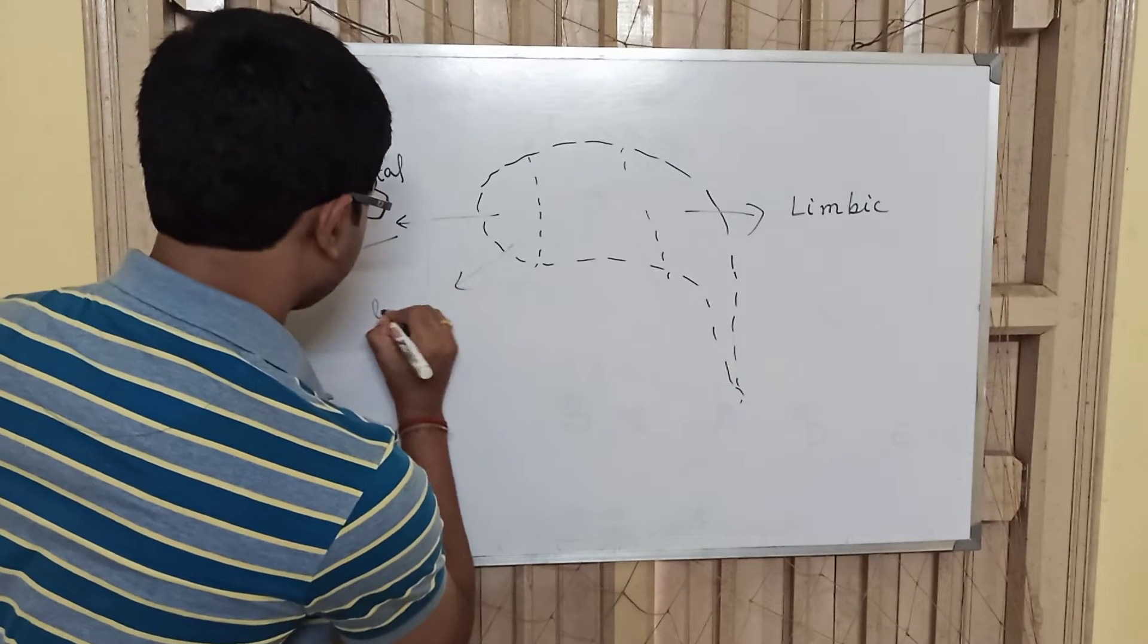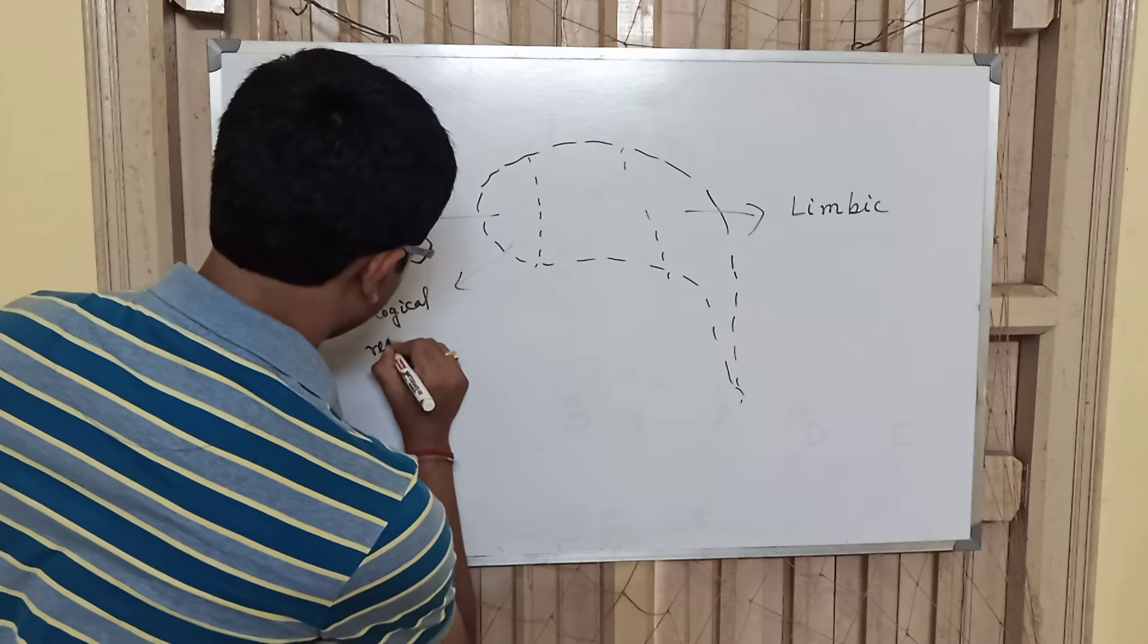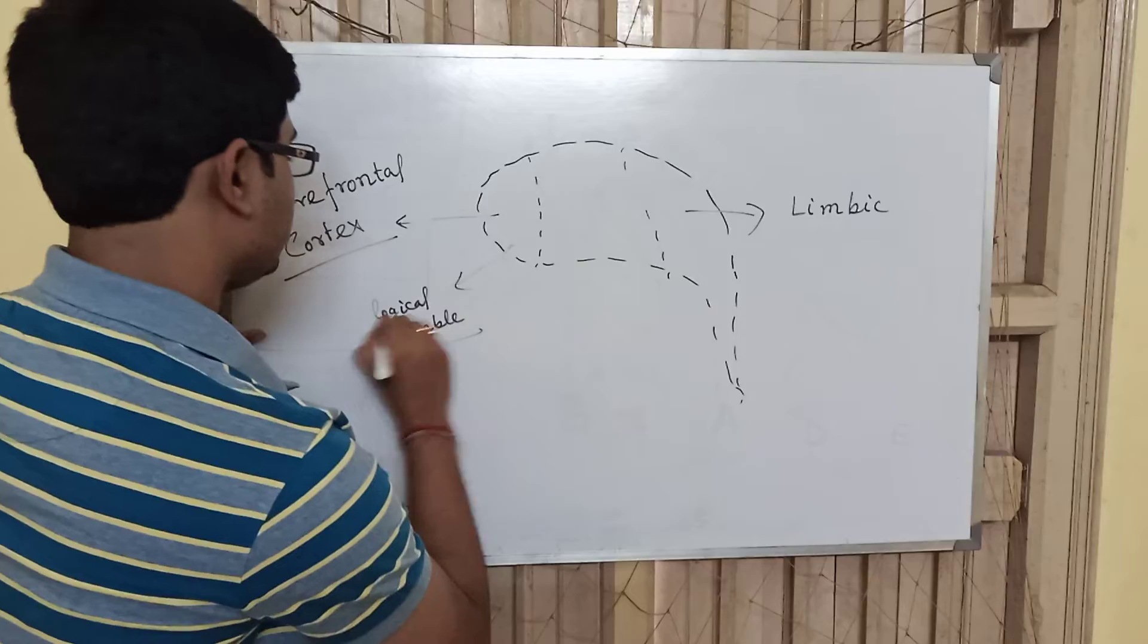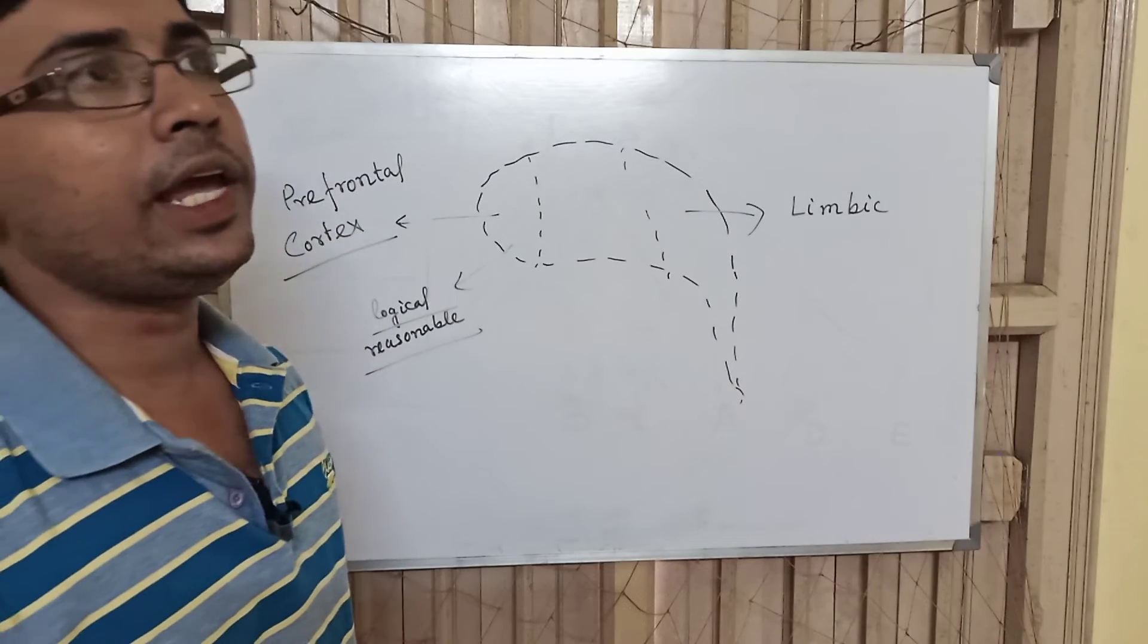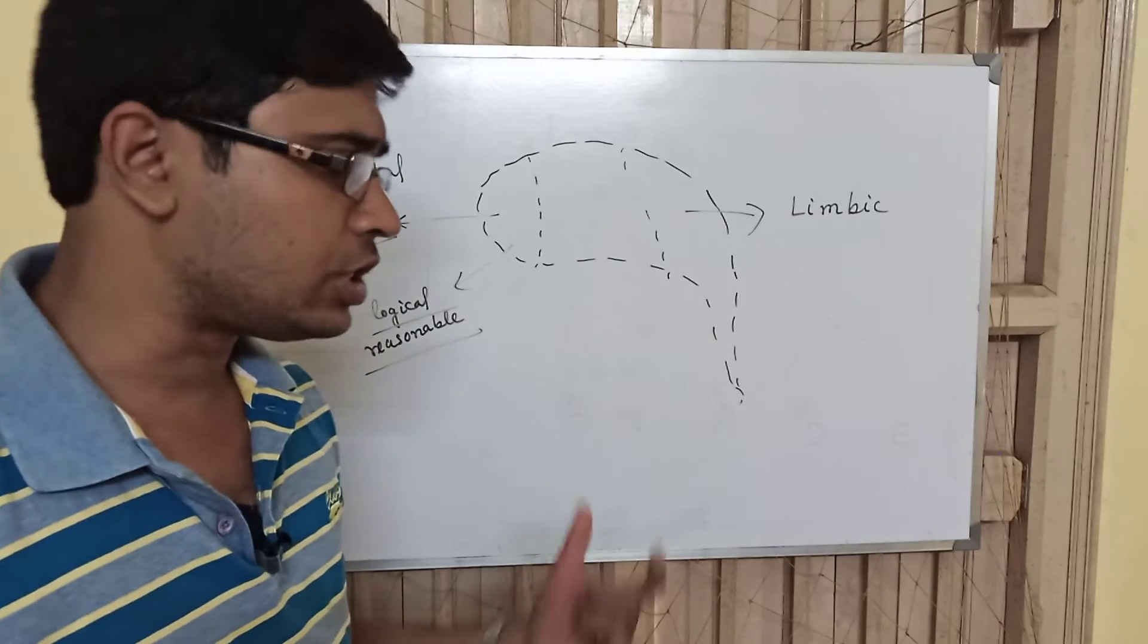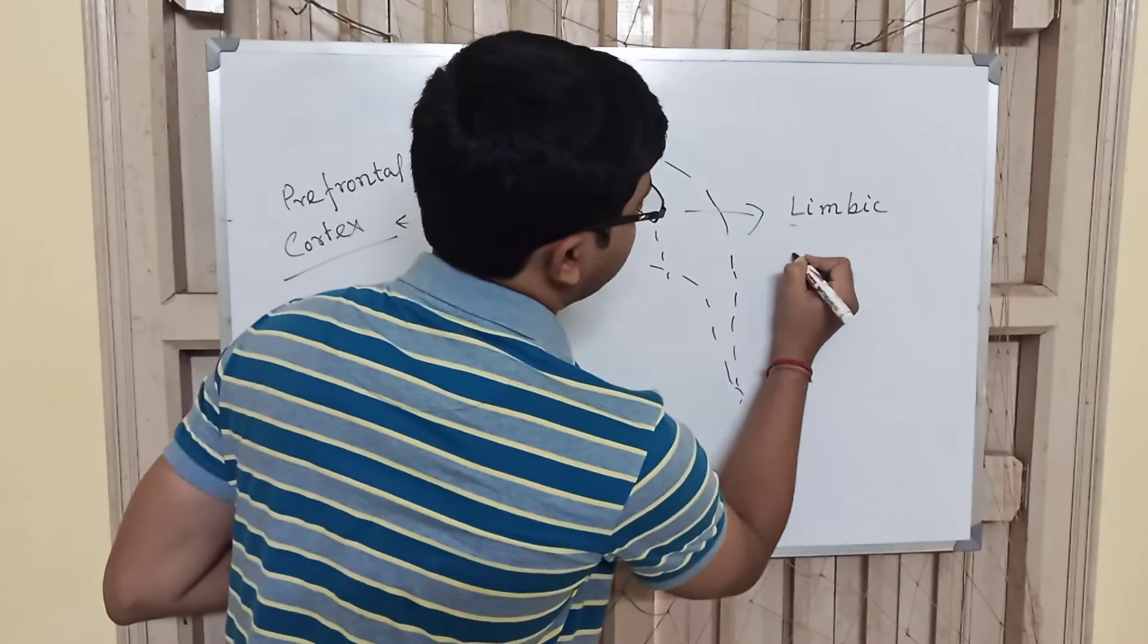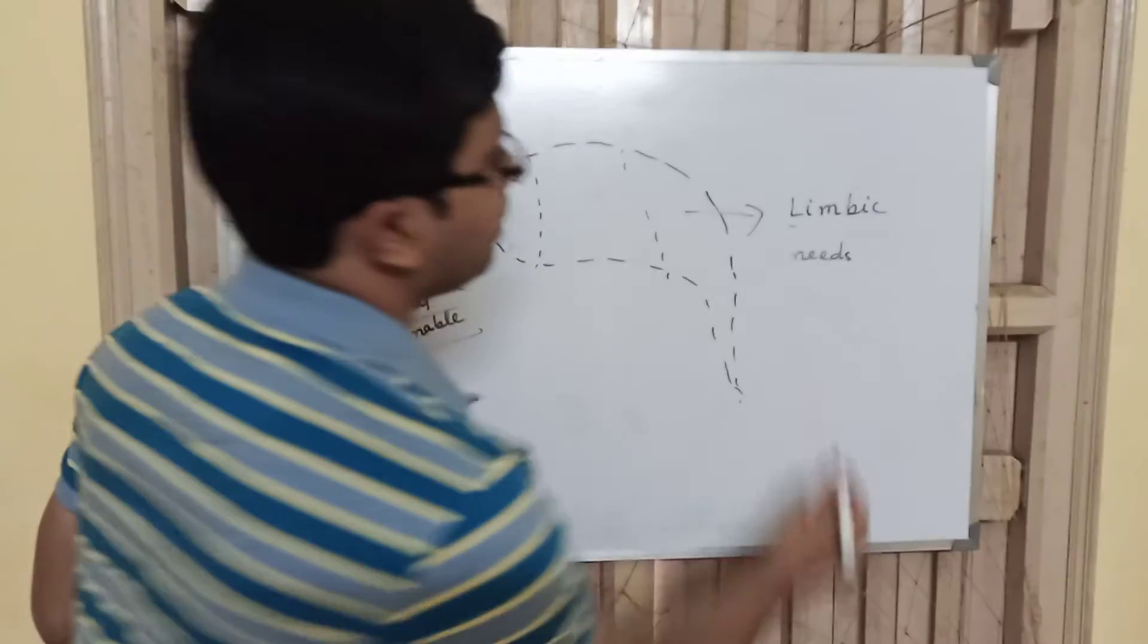So this is logical and reasonable. And the limbic system is mainly concerned about needs - what are the needs of humans. These are mainly physical needs, psychological needs, and everything. It is responsible for needs and it leads to compulsive actions.